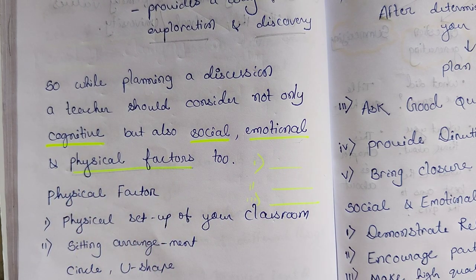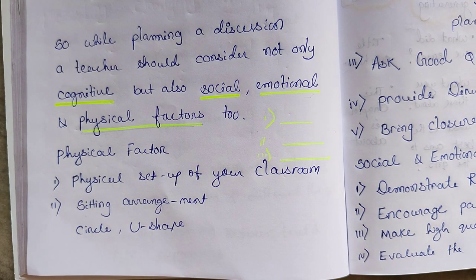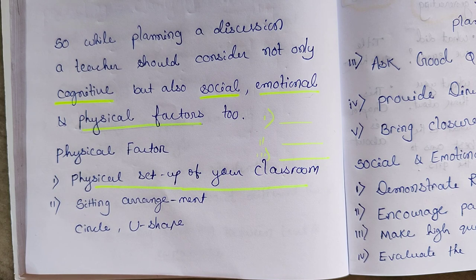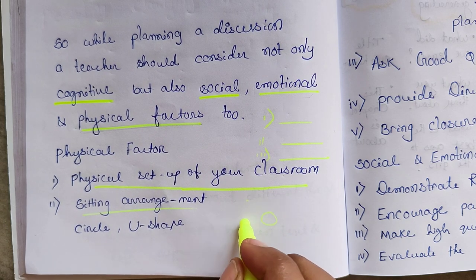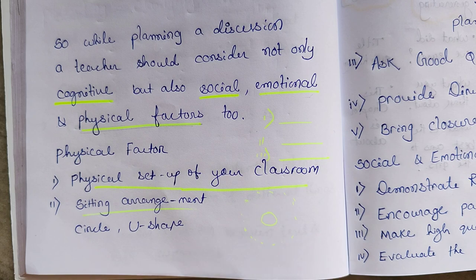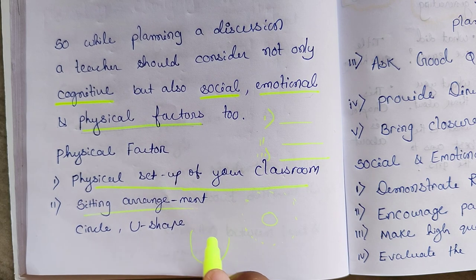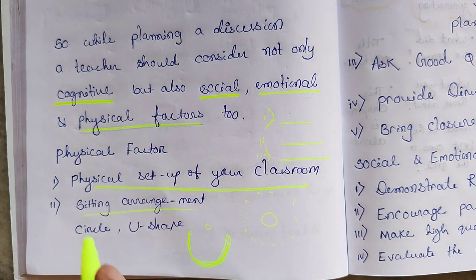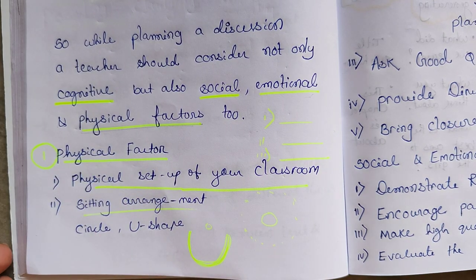The first factor is the physical factor — the physical setup of your classroom. Are you having the discussion in the laboratory, on the ground, or in the classroom? You need to check the sitting or standing position of students. For group discussion, the seating arrangement could be in a circle, with the teacher in the middle and students sitting around, or a U-shape — so that every student can see.